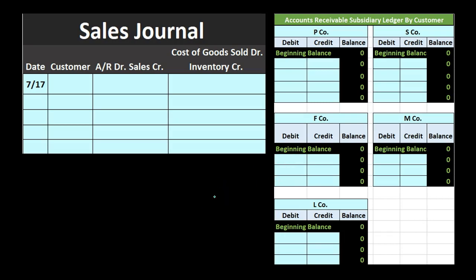This journal works best when we have a lot of similar types of sales — when we have many transactions making the same type of inventory sale. On 7/17, we have a customer, P Company, with a sale of $720 and a cost of $554. Notice how much shorter this is than a full journal entry. In a journal entry we would have to debit accounts receivable and credit sales, and then debit cost of goods sold and credit inventory. Here we just have one line item to do that. We are not going to post this to the general ledger until we sum everything up at the end of the time period.